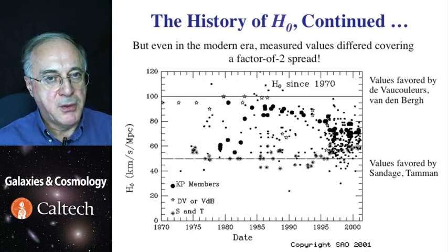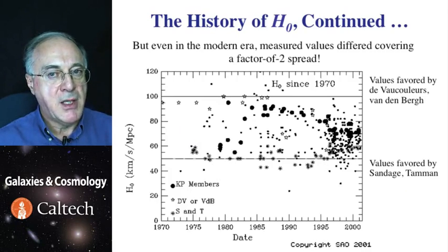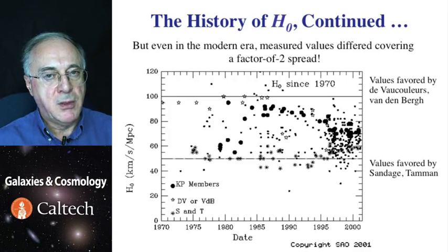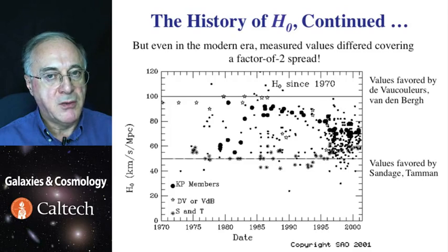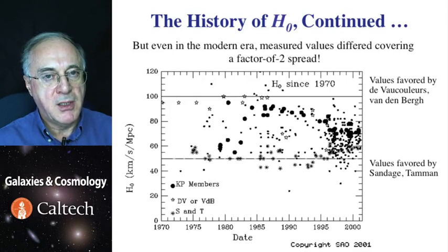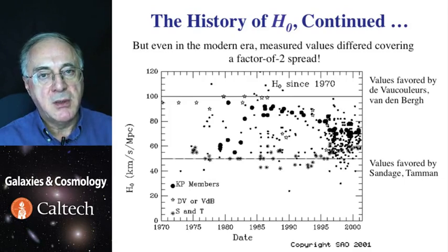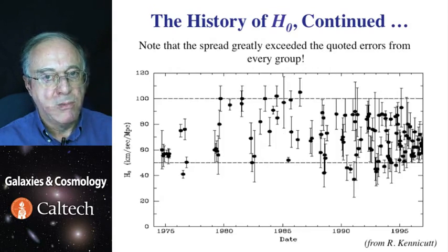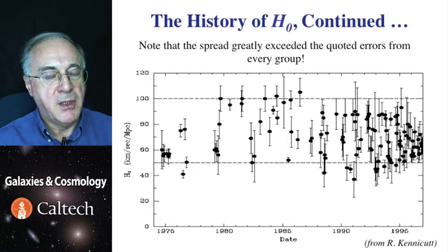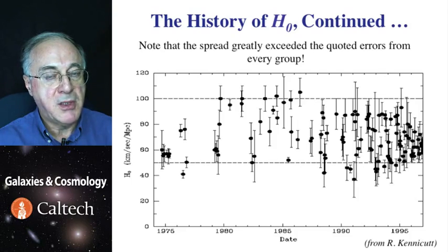There were two prominent schools of thought. One, led by Alan Sandage — the disciple of Hubble — pushed for the lower values, around 50 kilometers per second per megaparsec. The other, led by Gérard de Vaucouleurs and his collaborators in Texas and elsewhere, pushed for twice that much, about 100 kilometers per second per megaparsec. The two just could not reach agreement because they made different assumptions and used different calibrations. Even in modern days the spread continued; people started being more careful about error bars, and yet the actual spread of quoted values in the literature was always larger than the measurement error bars, persisting until roughly the 1990s.